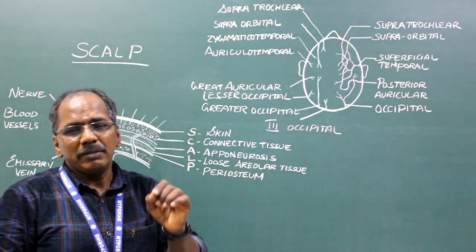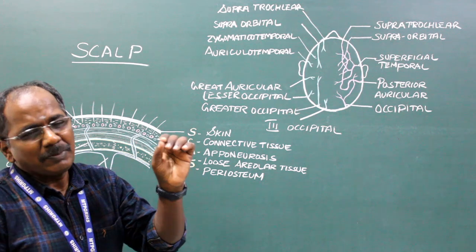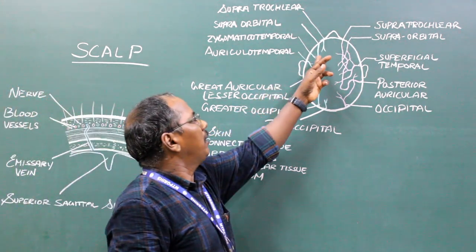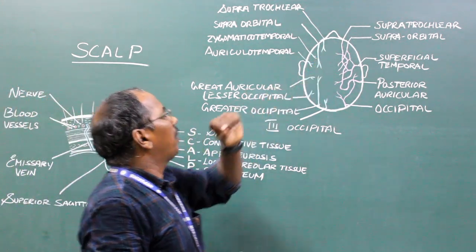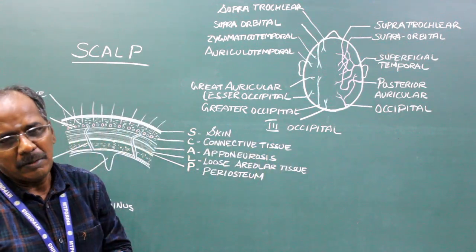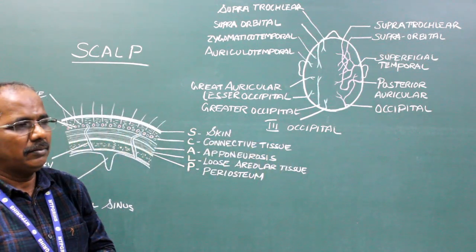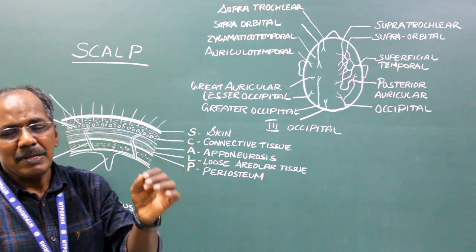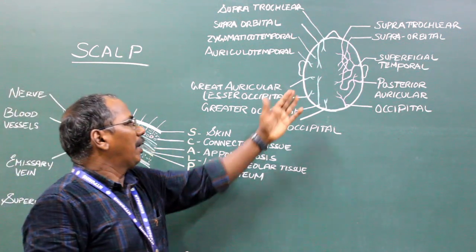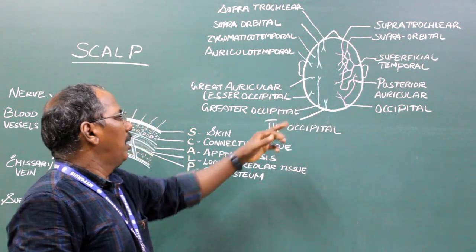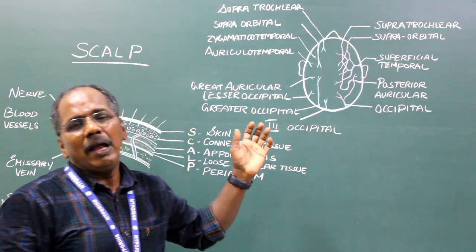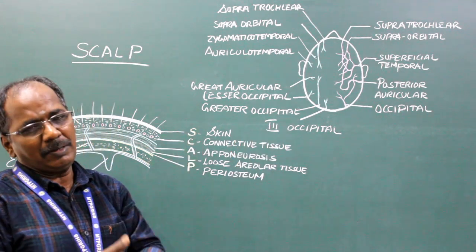The nerves present in front of the ear are: supratrochlear, supraorbital, zygomaticotemporal, and auriculotemporal. The nerves present behind the ear are: great auricular nerve, lesser occipital nerve, greater occipital nerve, and third occipital nerve.